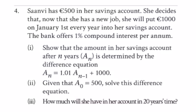Question 4: Sanvi has £500 in her savings account. She decides that with her new job she's going to put a thousand pounds on January the first every year into her account, and the bank offers one percent interest.